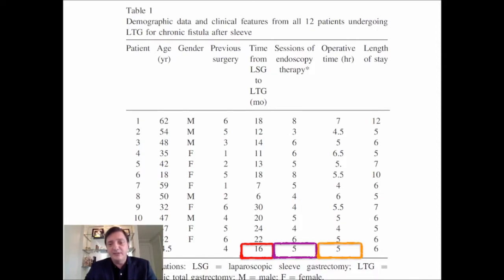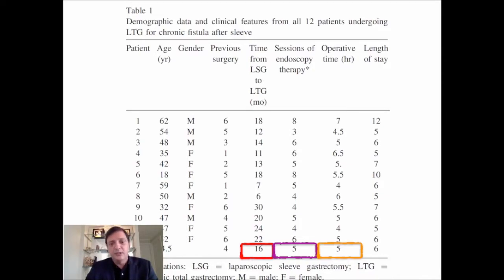It means it was a very challenging operation to do a total gastrectomy due to the chronic leaks, and what we were trying to use before — the traditional endoluminal approach — had failed on these patients.